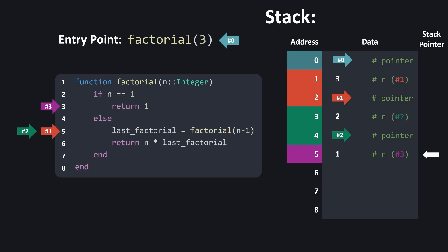This is the first example of a function returning a value — in this case the value returned is 1. Once the function finishes executing, the local variables are no longer needed, so we need to clean up the memory allocated to n equals 1. On the stack this is very simple: we just move the stack pointer up to the previous address. Notice that we're not actually overwriting the memory — all we're doing is moving the stack pointer, and any address beyond it is considered free memory. The last address on the stack kept a pointer helping us track the last instruction we were executing before the recursive call.